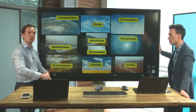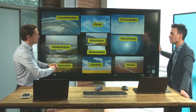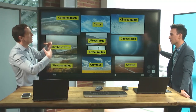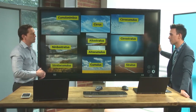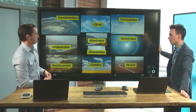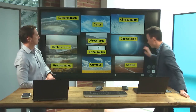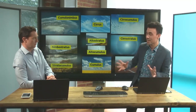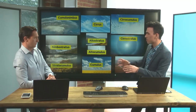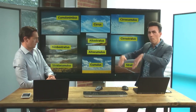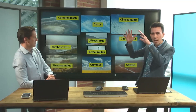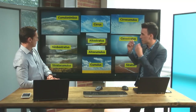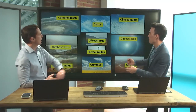Cumulonimbus, as you probably know, is the big thunderstorm cloud — combine cumulus with nimbus and you get cumulonimbus. And stratus with nimbus — that's really horrible weather. That's nimbostratus, just a big layer of cloud that gives you persistent wet weather.